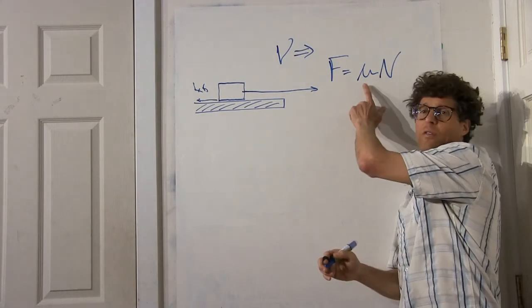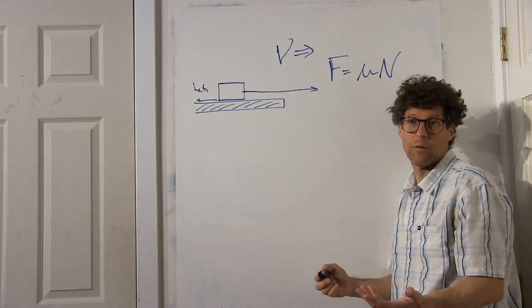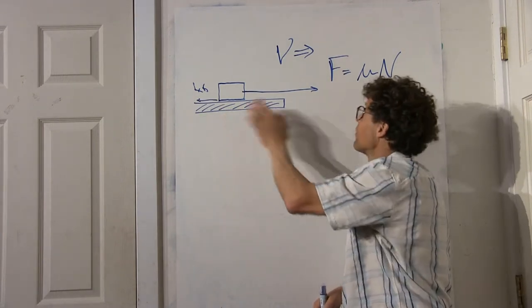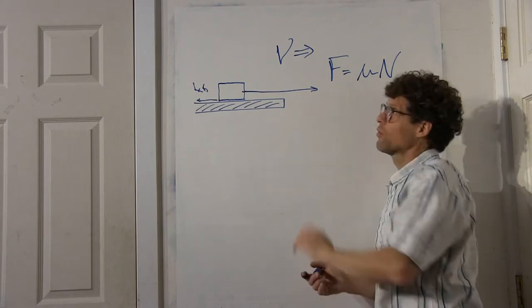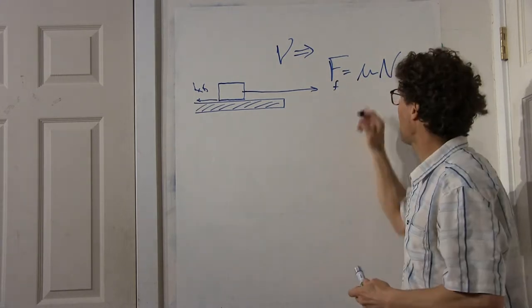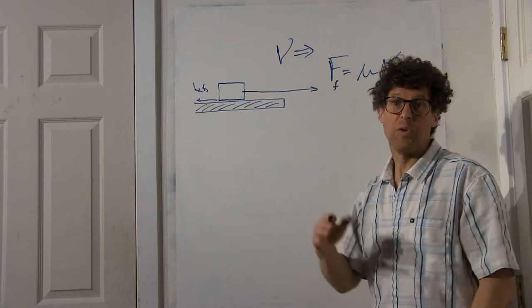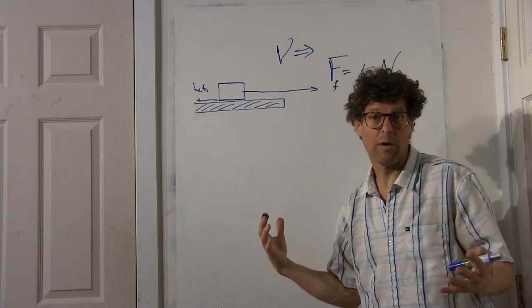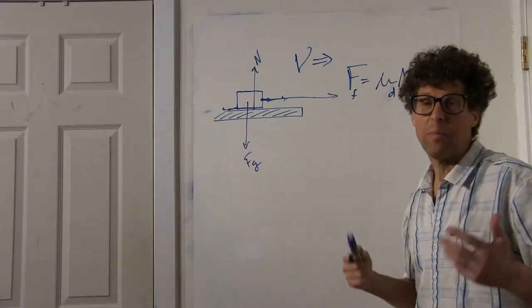What values of mu do you think are allowed? A perfectly frictionless surface would have no frictional force, so mu would be zero. How high can mu get? Can mu get to be one or greater than one?